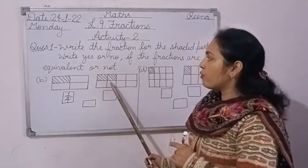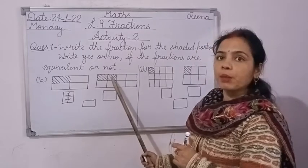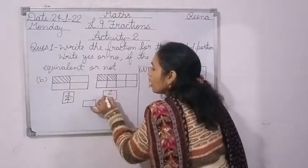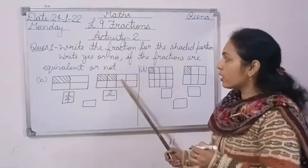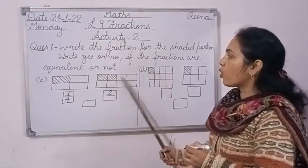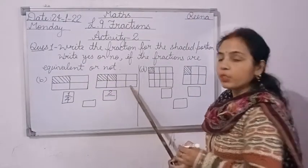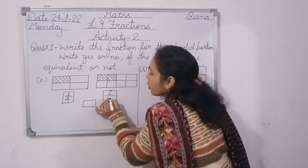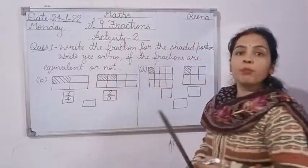In the second figure you have two shaded portions. So write two upon the total number of parts: 1, 2, 3, 4, 5, 6, 7, 8. Write 2 upon 8 as the fraction for the shaded portion.